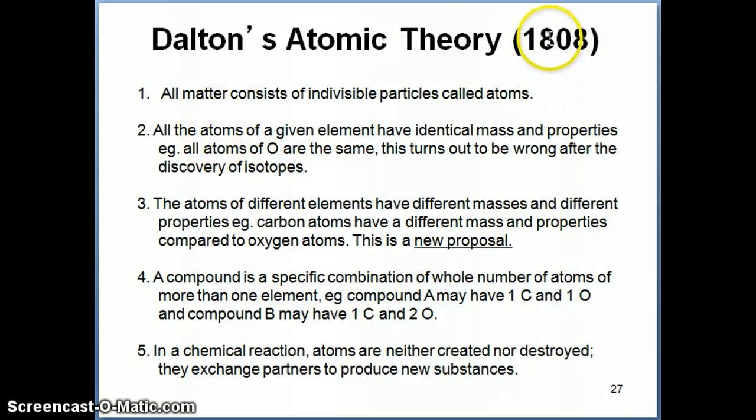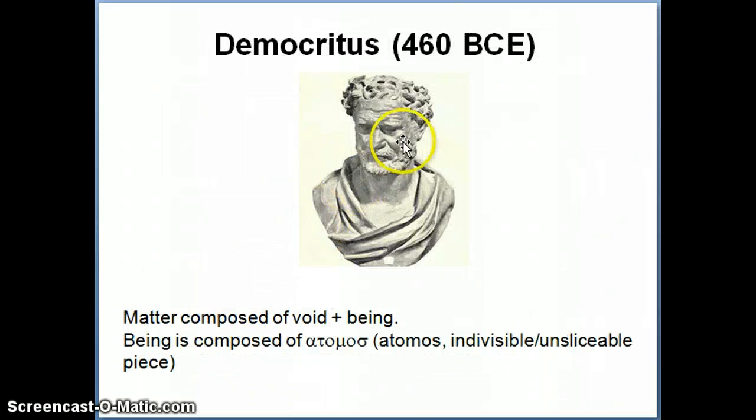Dalton's atomic theory, developed in the 1800s, basically went back to this idea that was originally proposed by Democritus, way back when, in ancient Greece, that matter is really something that is composed of a smallest piece that you can't divide anymore. Now, Dalton is a little bit more specific than Democritus in terms of its development of atomic theory.